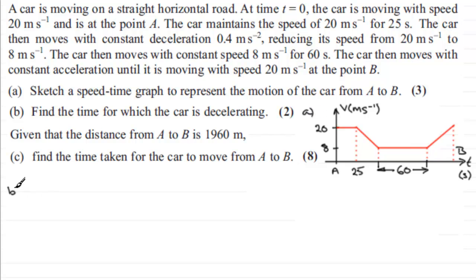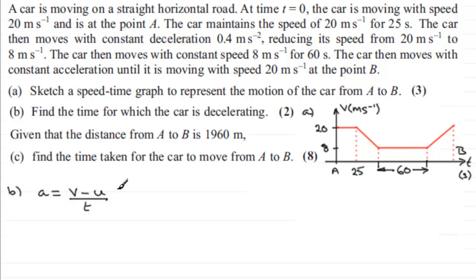In part B, we've got to find the time for which the car is decelerating. Acceleration is the rate of change of velocity — that's the difference between the final velocity V and the initial velocity U, divided by the time taken. Rearranging gives us the familiar formula V equals U plus at.